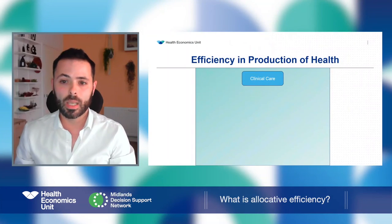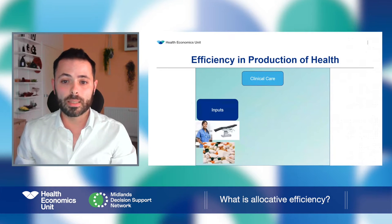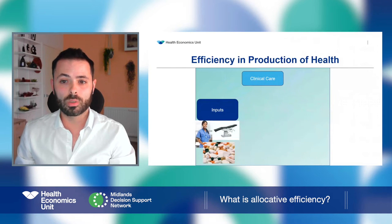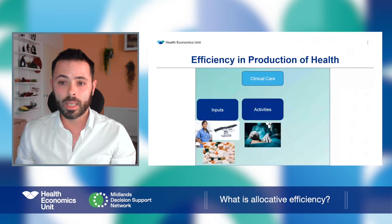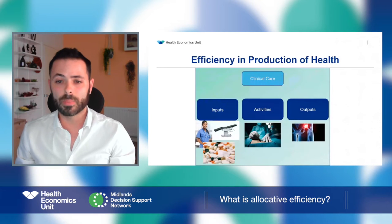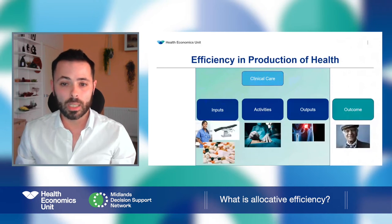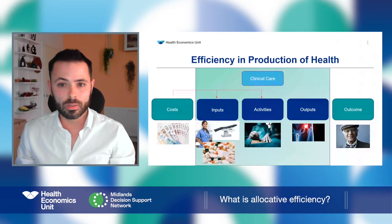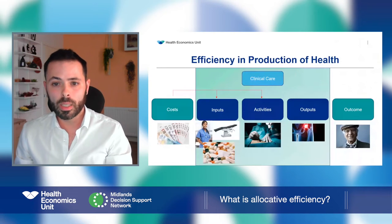Let's start with the production process where we transform inputs into outputs. To fit this concept in our area of interest, let's take an example through the production of clinical care, like hip surgery. Here we can identify several inputs: surgeon as labour, theatre's bed as capital, drugs, heparins, and gloves as material. We put those into the clinical care production box and through activities like hip operation or inpatient stays, we obtain output like a new hip after the replacement. All this will result in outcomes like improvement in mobility or quality of life, or even patient experience. The process we just described will have a cost of course, and analysing those costs, outputs and outcomes will be at the core of the efficiency journey.